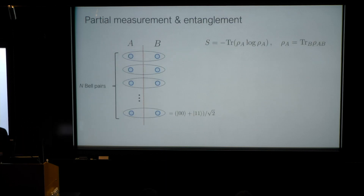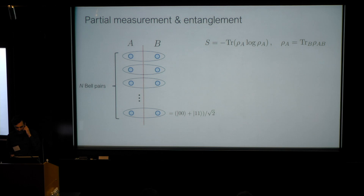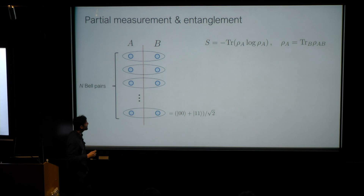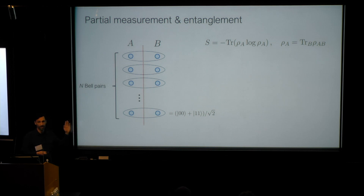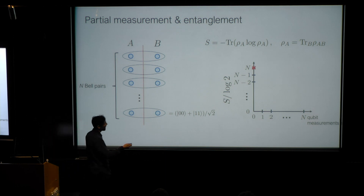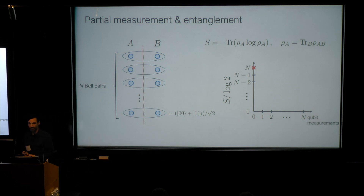To formulate the question, imagine the following simple setting. We have a set of N bell pairs, and I imagine a bipartition of the system such that I cut all the bell pairs in half. These are subsystems A and B, and what I am interested in is what is the entanglement entropy across this bipartition. If I have N bell pairs, I'll have N bits of entanglement, or E bits.